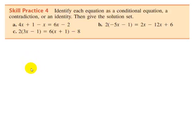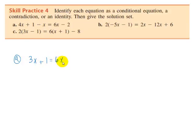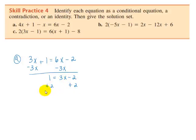You should have found that A is a conditional equation with solution set 1. Combining like terms, we get 3x plus 1 equals 6x minus 2. Subtract 3x from each side to get 1 equals 3x minus 2. Add 2 to each side to get 3 equals 3x. So divide by 3 to get 1 equals x.